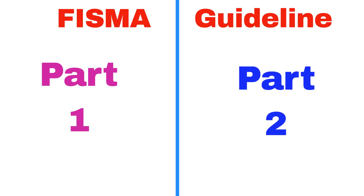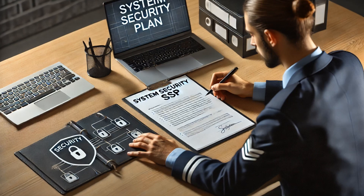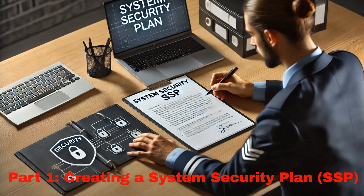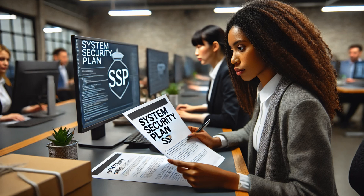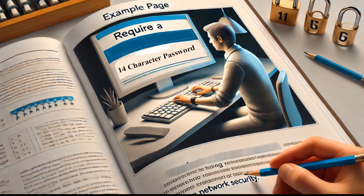Think of the FISMA guideline in a nutshell as being processed in two halves. In the first half — Part 1 — a security analyst will create a System Security Plan, SSP. The System Security Plan basically says, this is how we plan to keep our network secured. For example, it could say something like: we plan to force every user on the network to have a minimum of 14-character password before logging into their computer.